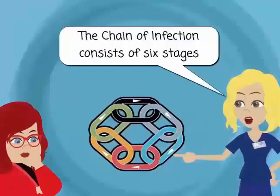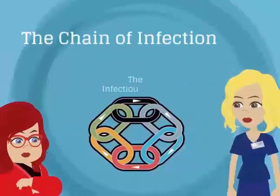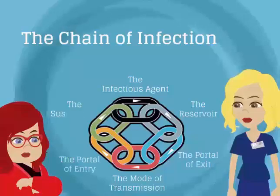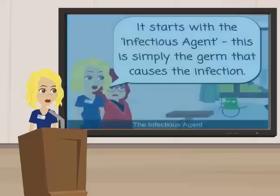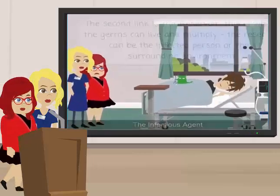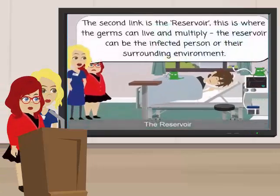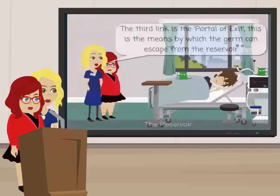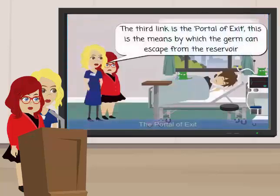The six stages are: the infectious agent, the reservoir, the portal of exit, the mode of transmission, the portal of entry, and the susceptible host. It starts with the infectious agent — simply the germ that causes the infection. The second link is the reservoir, where germs can live and multiply — either the infected person or the surrounding environment. The third link is the portal of exit: the means by which the germ can escape from the reservoir.